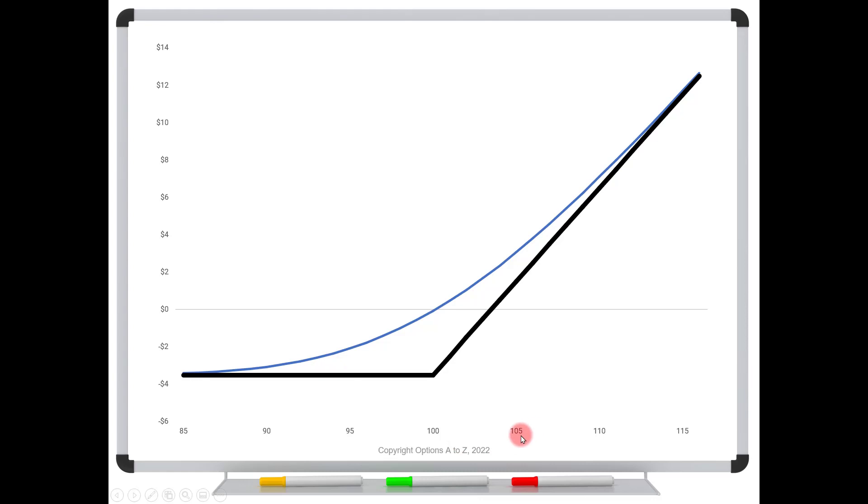If the stock is $105 now, let's say with 30 days to go, what's your current profit? Well, trace a line up to the blue curve, look left, and it says that you're at about $3.